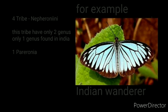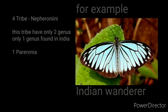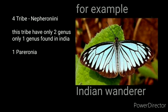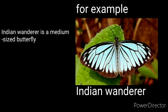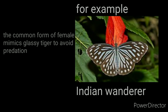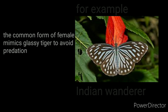The fourth tribe is Nephroniini. This tribe has only two genera, and only one of them is found in India. For example, the Indian Wanderer from genus Parantica. The Indian Wanderer is a medium-sized butterfly. The common form of the female mimics the Glassy Tiger to avoid predation.